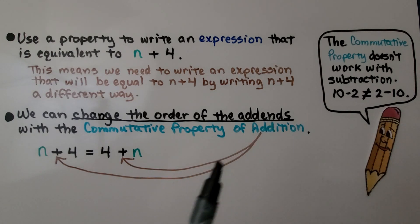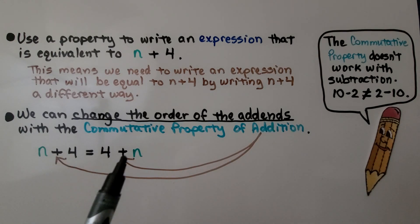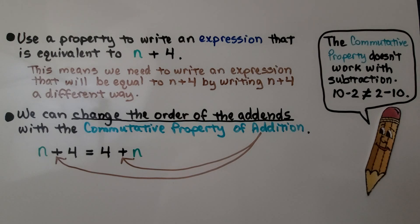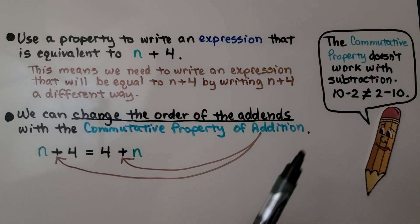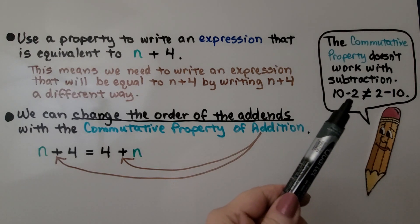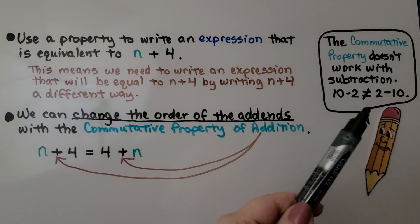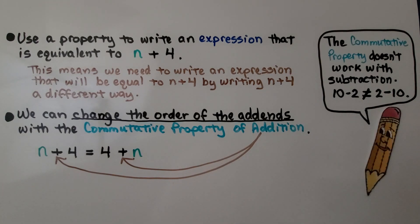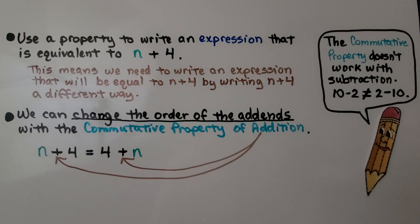We know it's the commutative property of addition because we have plus signs. Now, be careful — the commutative property doesn't work with subtraction. Ten minus two is not equal to two minus ten. It works with addition and with multiplication.